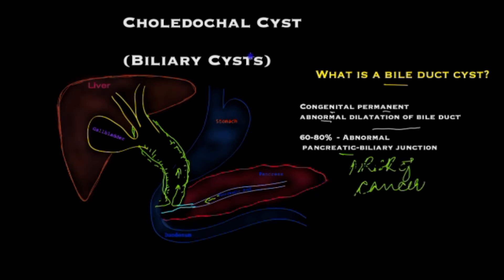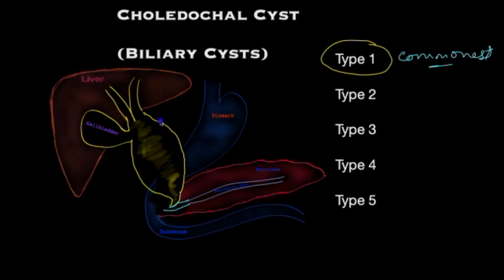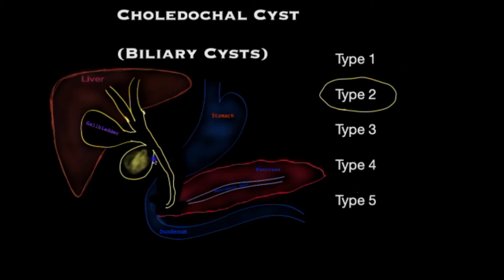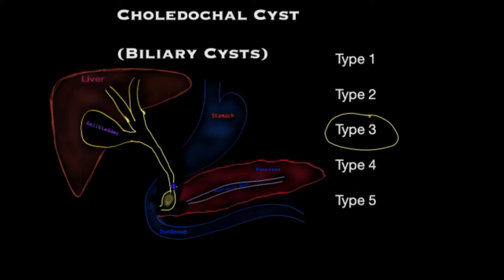Now let's see what types of cysts there are. The type 1 cyst has a uniform dilatation of all of the bile duct outside of the liver, down to its junction and exit into the small bowel. A type 2 cyst is an outpouching of the main bile duct. Type 3 cyst is a dilatation of the bile duct nearest its entry into the small bowel — this variant is quite rare.